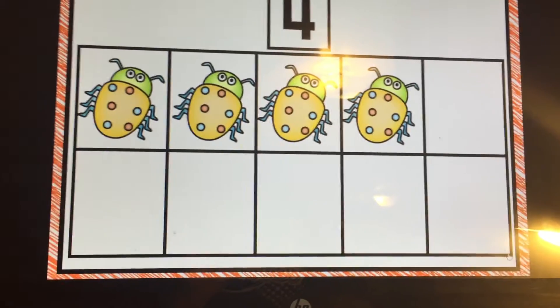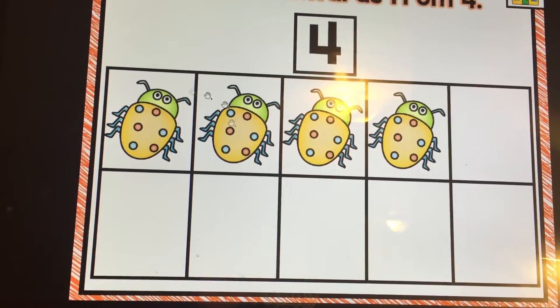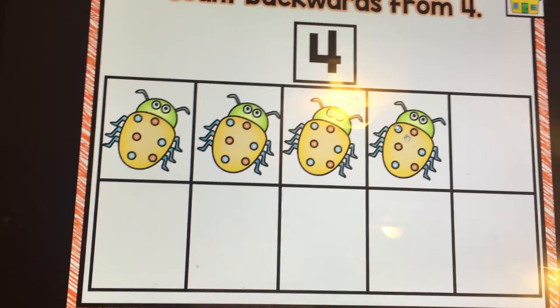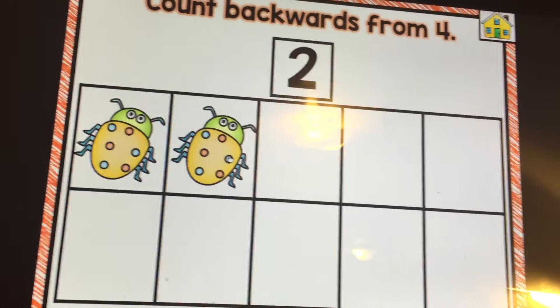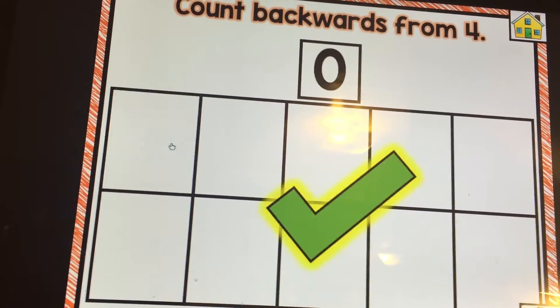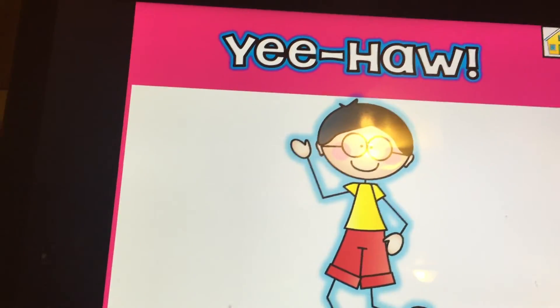Okay, now let's go to the next one. Let's count backwards from four. So we're going to click on them to take them back away. We want to get back down to zero. So let's say four. Four, three, two, one, zero. Good job counting them out today, guys. Yeehaw.